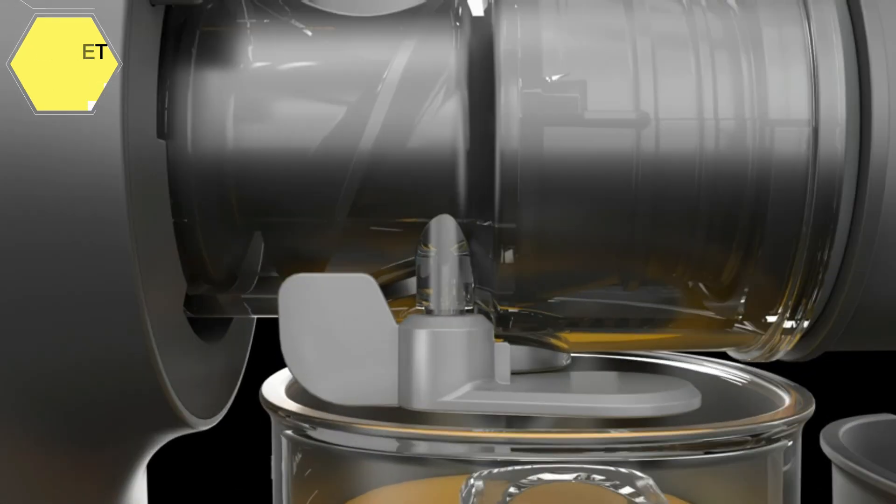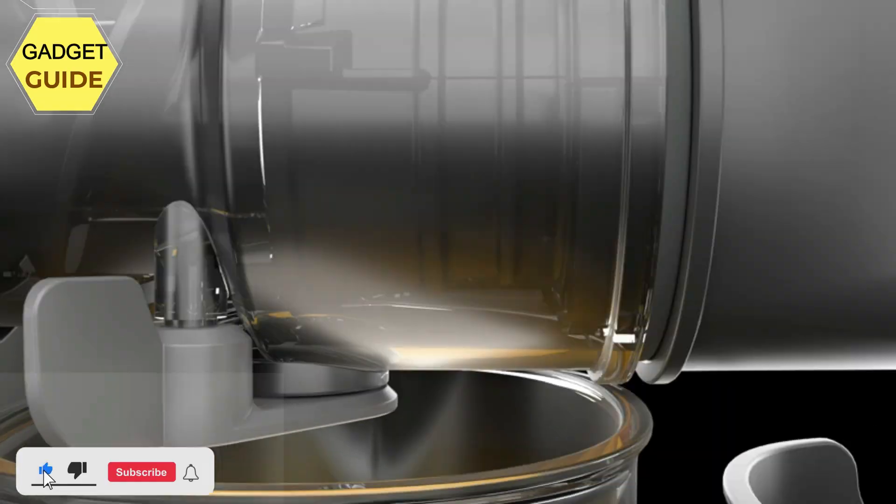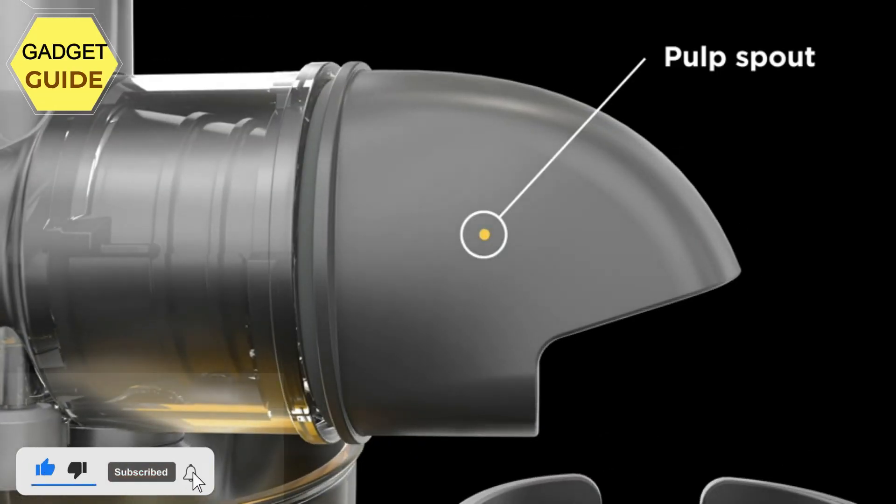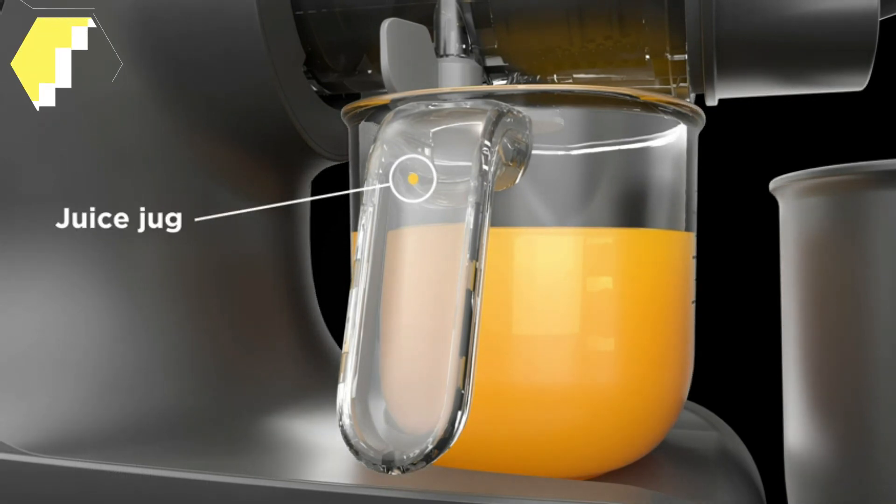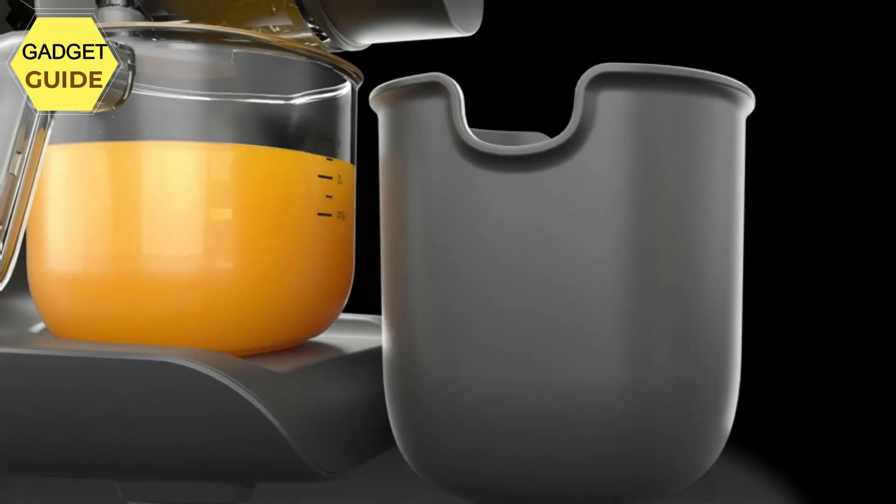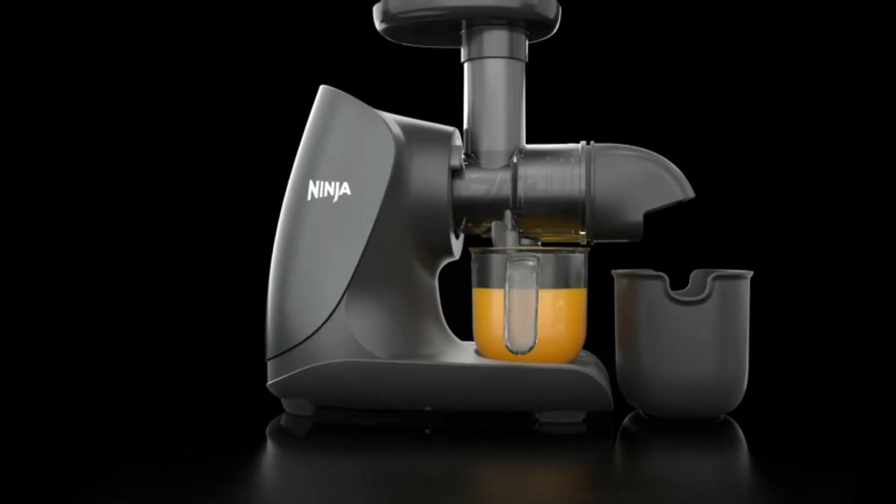Two one-touch programs for simple use: start/stop and reverse. Powerful high-torque motor base rotates auger at low speeds. Simple assembly makes for no hassle setup and cleaning. Cleaning brush included for those hard-to-reach areas. Anti-drip lever keeps surfaces clean and prevents waste. Compact size makes it easy to store or fit under cabinets.